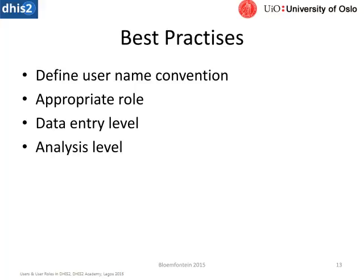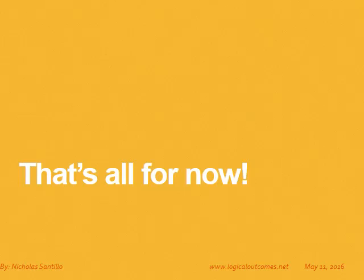Finally, consider the data entry level and the analysis level — how you're entering data at what level and what data you're going to be looking at. That has to do with the data sets accessible in user roles, and of course the org units you'll have access to as a user. If you have access to only certain organizational units, you may not be able to analyze all the data, or you may be seeing only part of the full picture — something to keep in mind when creating users and user roles. This is the final slide, so I'll leave you with a short quiz, as we like to do at the end of these Office Mixes. Thanks so much for watching, and we'll pick up with Unit 3 after this. Until next time, I'm Nicholas Santillo from Logical Outcomes.